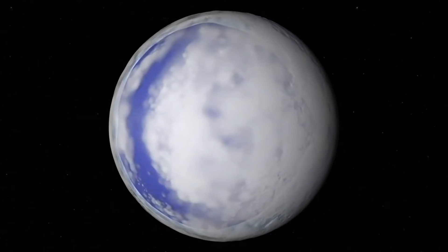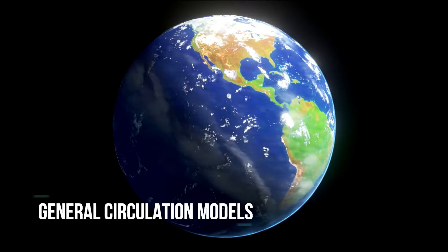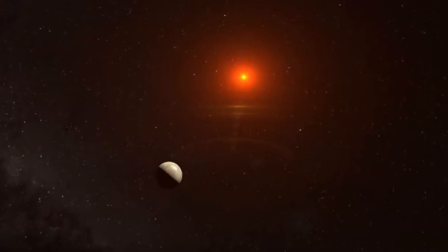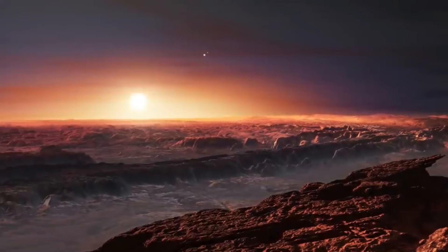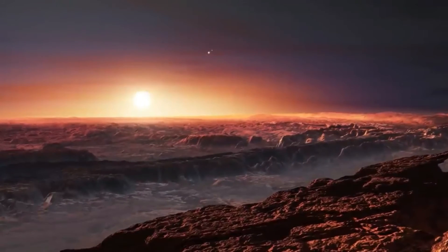The atmosphere of Proxima Centauri b was modeled using climate models, such as general circulation models used on Earth. Depending on its properties, like whether or not it is tidally locked, how much water it has, and how much carbon dioxide it has, there are many possible outcomes.